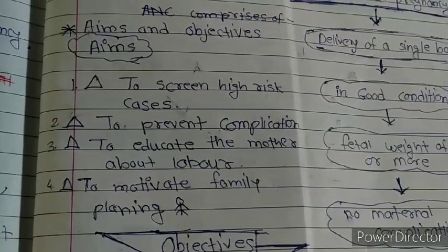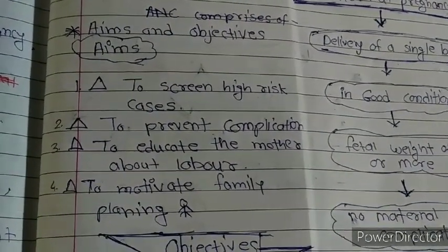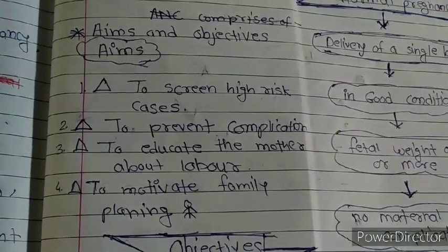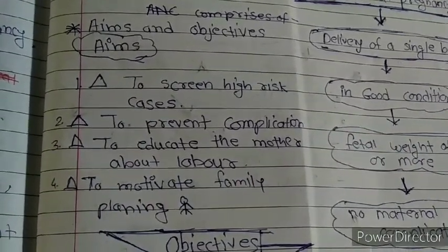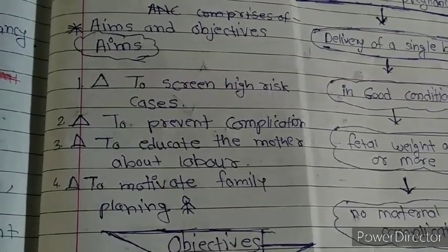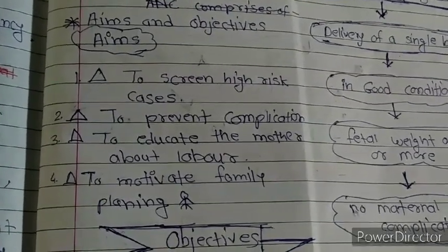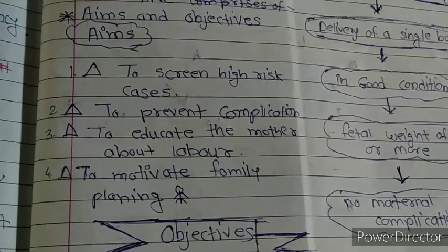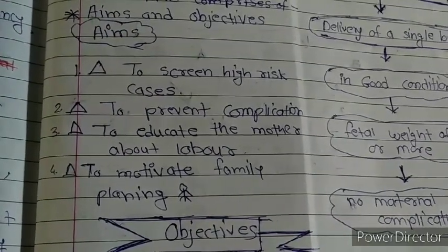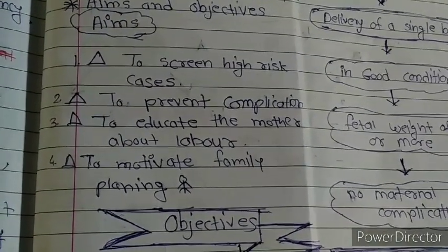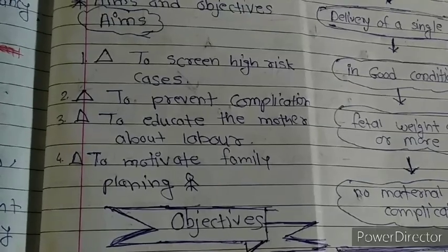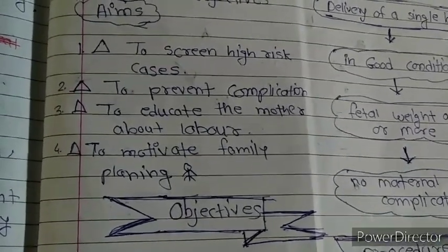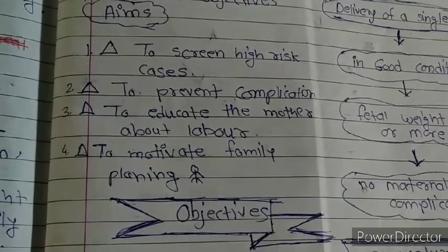The first aim is to screen high risk cases — to identify high risk cases and prevent complications. We also have to educate the mother about labor, and to motivate family planning.